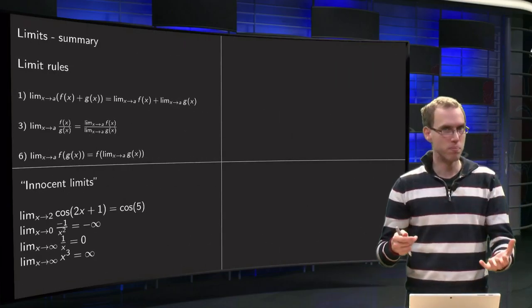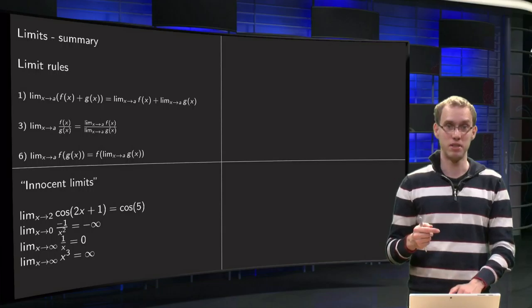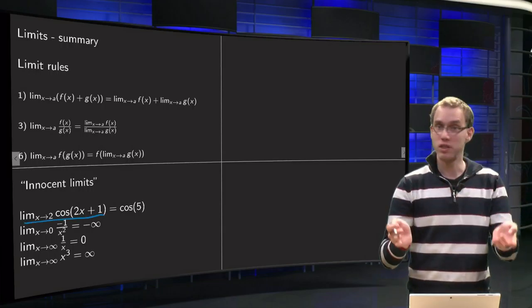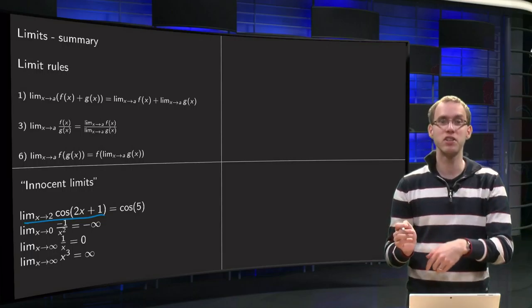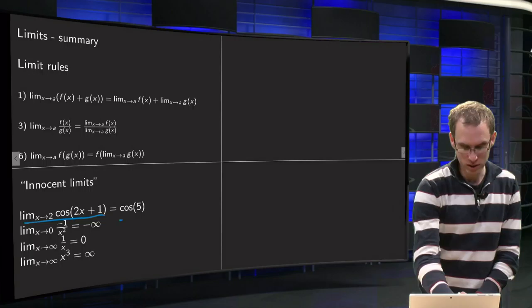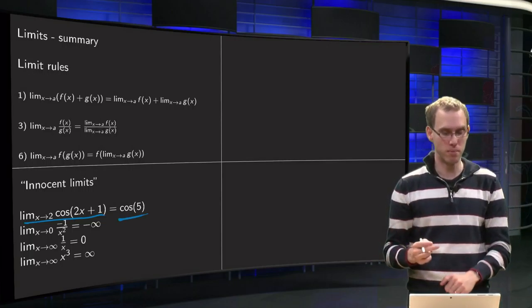And in that way we can compute many innocent limits, like limit x to 2 of cosine(2x plus 1). Cosine is a continuous function, you can take the limit inside. Limit x to 2 of 2x plus 1, you can basically plug in the number, you get the cosine of 5. So, an example of an innocent limit.